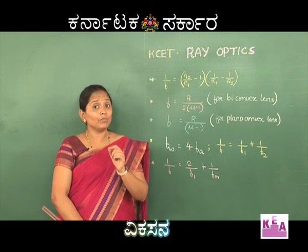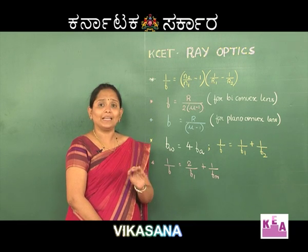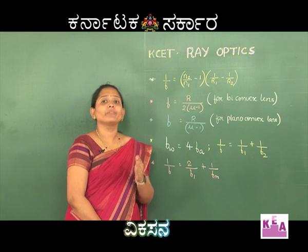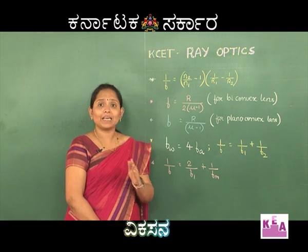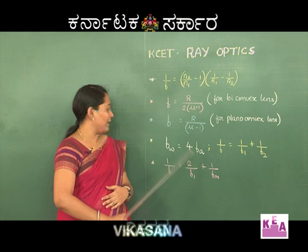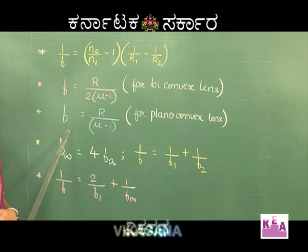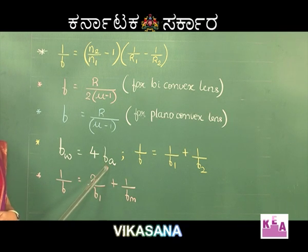Now let us consider a lens immersed in water of refractive index 4/3. In this case, the focal length in water fw is equal to 4 times the focal length in air fa — that is, fw = 4 × fa.